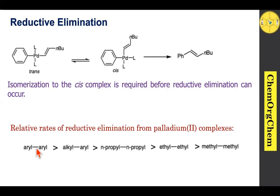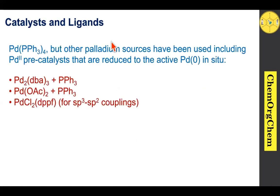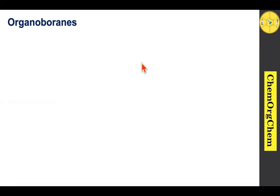Regarding relative rates of reductive elimination from palladium complexes, aryl-aryl coupling is faster compared to alkyl-alkyl coupling. For catalysts and ligands, palladium tetrakis(triphenylphosphine) is commonly used, but other palladium sources such as palladium(II) precatalysts with suitable ligands also work — for example, Pd(dba)2 with triphenylphosphine, or palladium acetate with triphenylphosphine, which generate Pd(0) in situ. For sp3-sp2 coupling, PdCl2(dppf) is mostly used. Dioxane or aqueous environments in addition to organic solvents are useful for the Suzuki reaction.